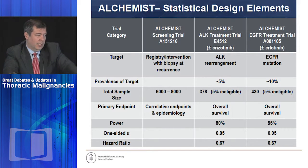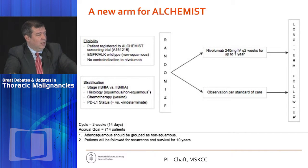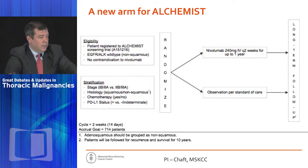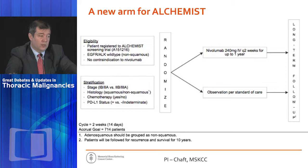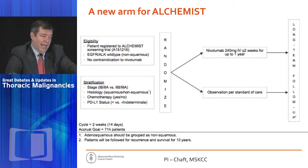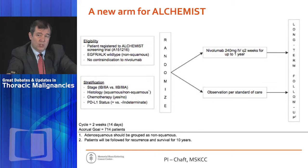That's being remedied with a new arm for ALCHEMIST, introduced over the next few months, which randomizes patients to observation or nivolumab as adjuvant treatment for resected non-small cell lung cancer in those patients without ALK or EGFR mutations.